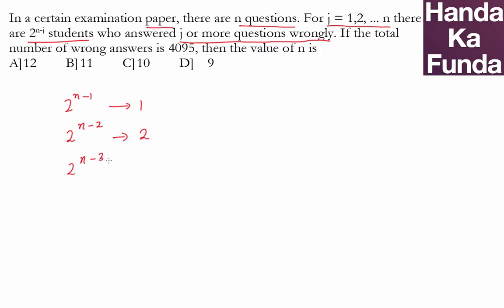2 to the power of n minus 3 students answered 3 questions wrongly. So how many students answered all the n questions wrongly? Well, that is 2 to the power of n minus n, or 2 to the power of 0, or 1 student answered all questions wrongly.